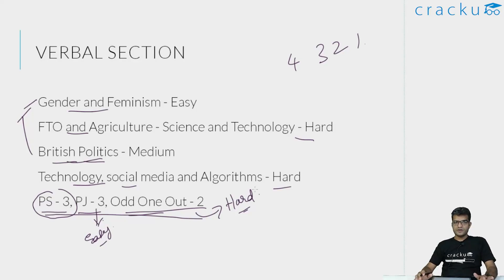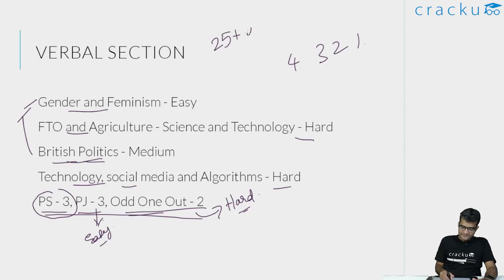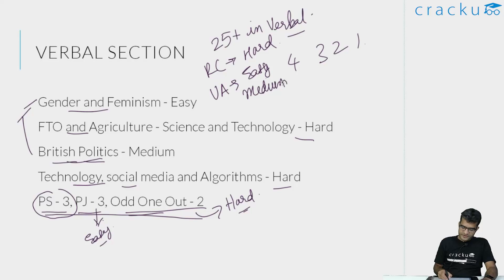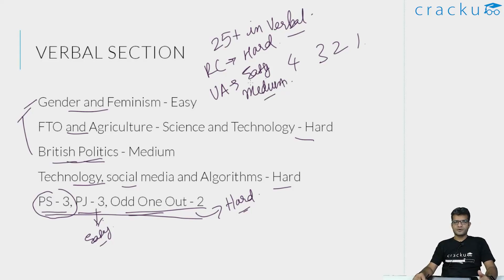Having said that, a score of around 25 plus in verbal is a good score in this section. The RCs were definitely harder while verbal ability was on the easy to medium side. So a score of 25 plus is something you should be fairly proud about. Let us now look at the LRDI section.